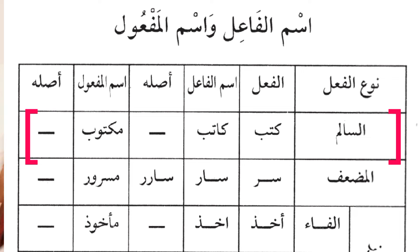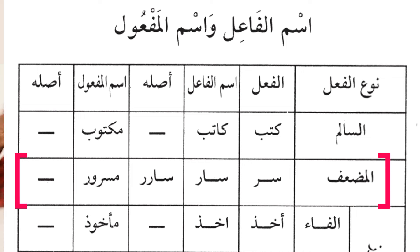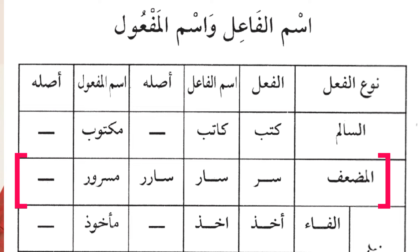The second type of verb is al-muda'af. Al-muda'af is a type of verb which has one of its letters doubled into two. An example is the word 'sarra', meaning to keep a secret or to rejoice. 'Saarrun' means somebody who is rejoicing — the origin of the word is 'sarrun' but because it has a doubled letter it becomes 'saarrun'. And 'masrur' means someone who is happy or someone who is being made to rejoice.